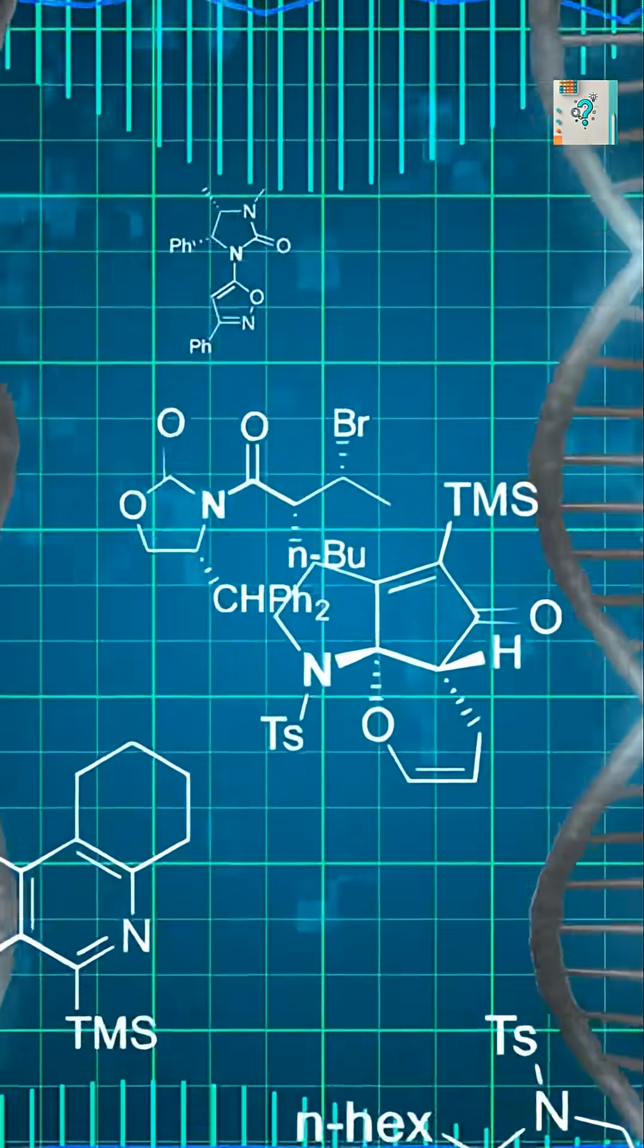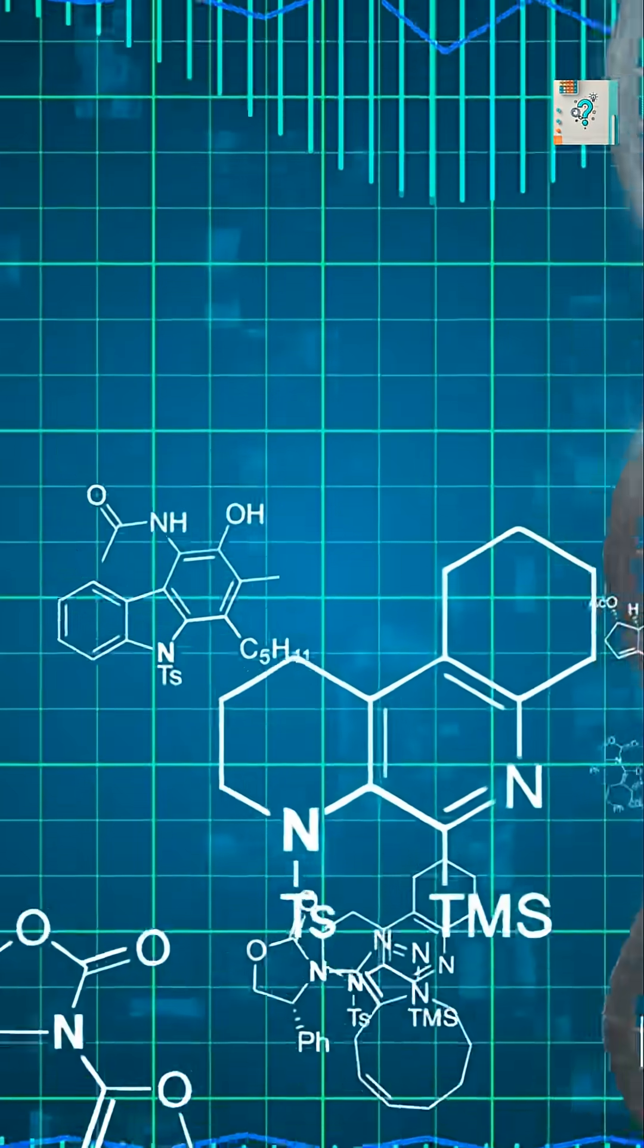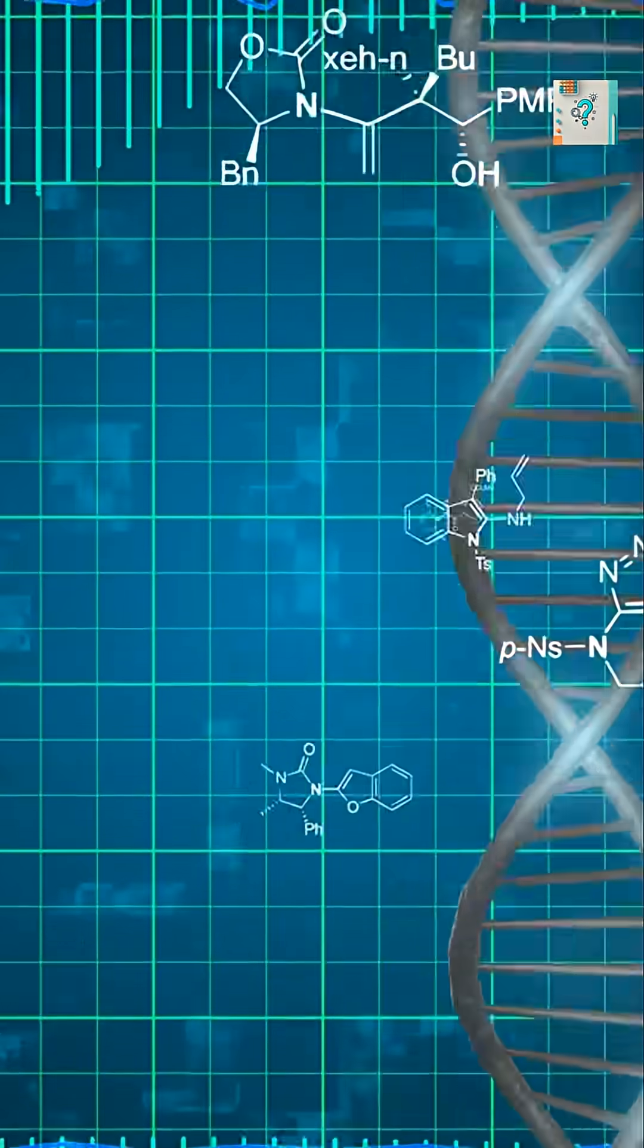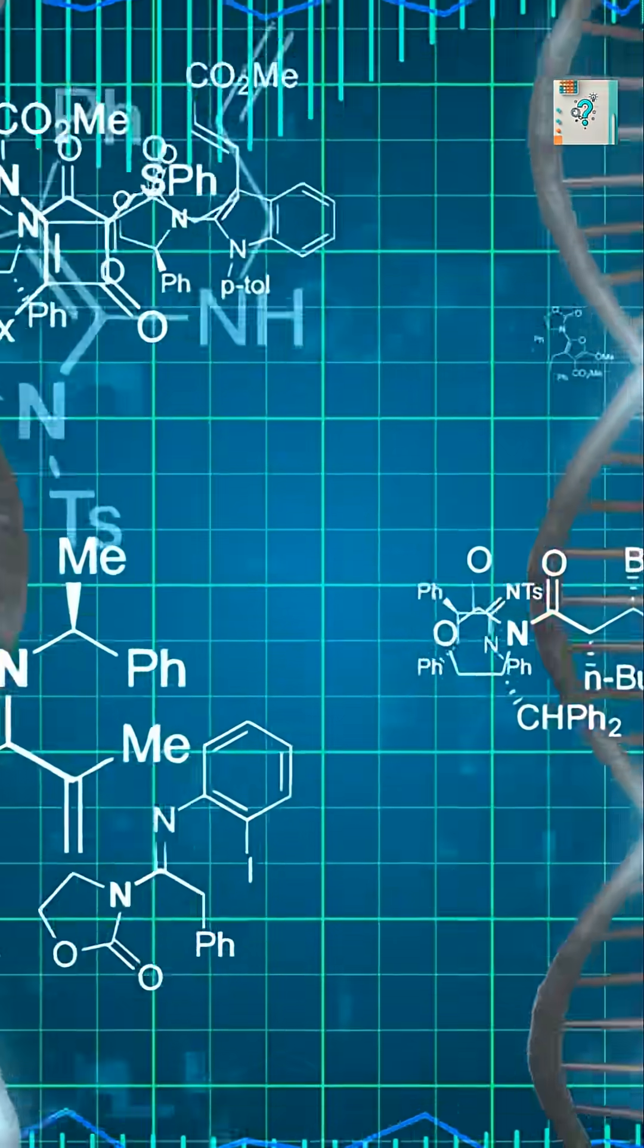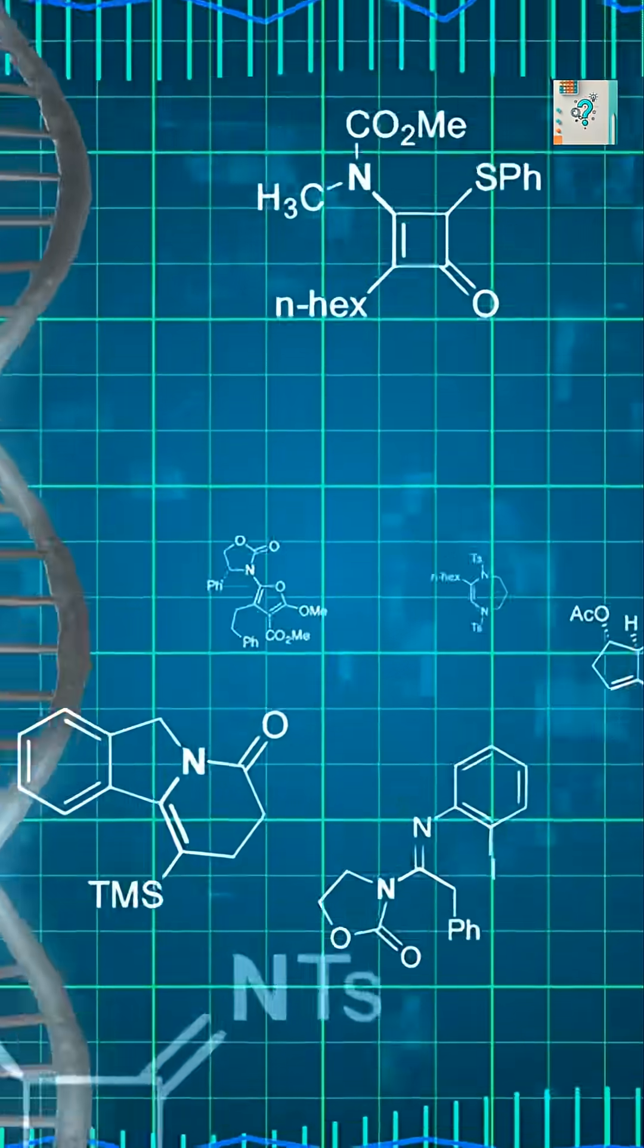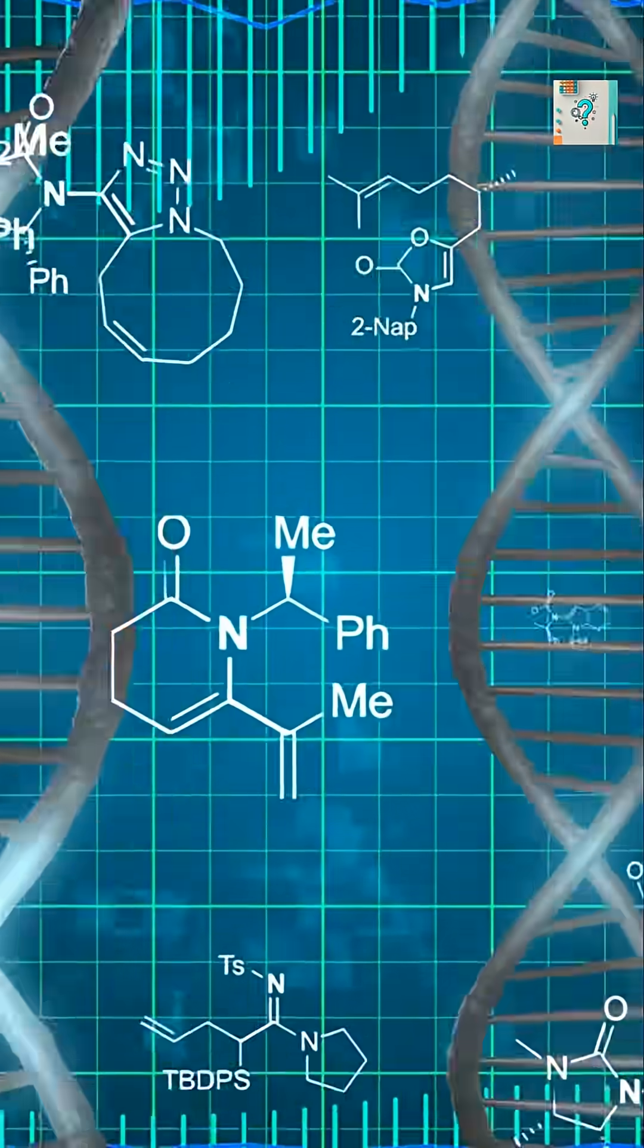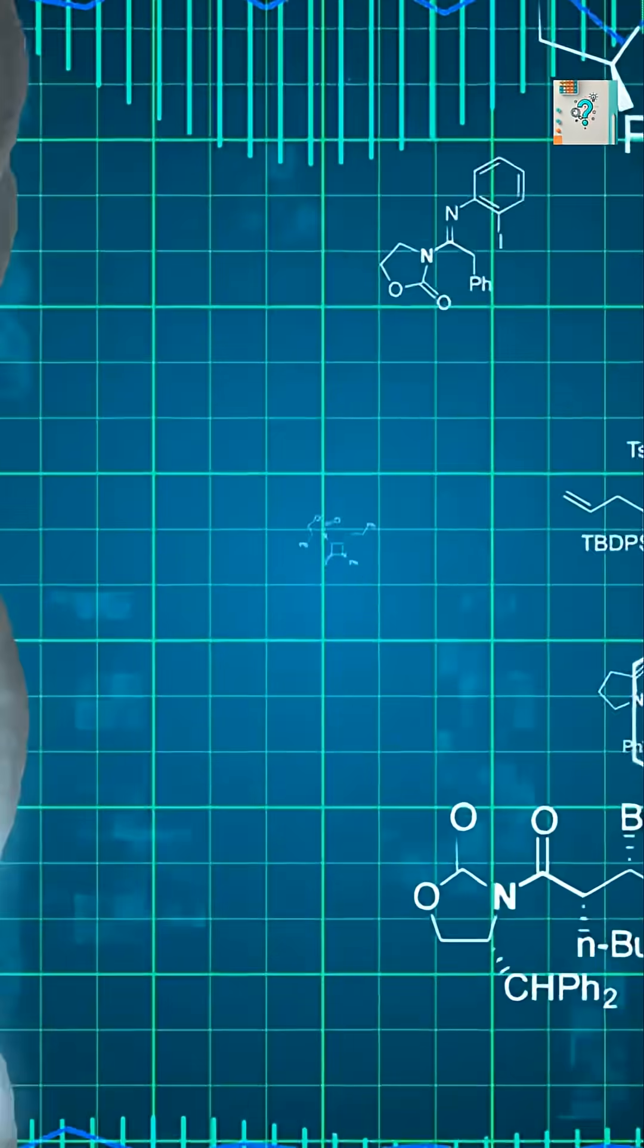All living organisms on Earth use DNA built from the same chemical building blocks. These blocks control basic processes like copying DNA, repairing cells, and producing energy. Because all life evolved from a common ancestor, many of these core instructions are shared.